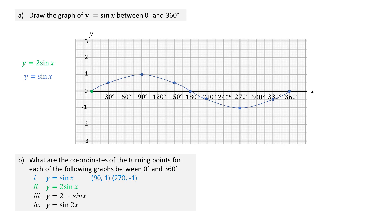To complete the sketch, simply multiply the y values of sine x by 2 to obtain 2 times sine x and plot. For example, sine 30 is equal to 0.5, so 2 times sine 30 is 1. Sine 90 is 1, so 2 times sine 90 is 2. 2 times sine 150 is 1. 2 times sine 180 is 0. 2 times sine 210 degrees is minus 1, and so on.